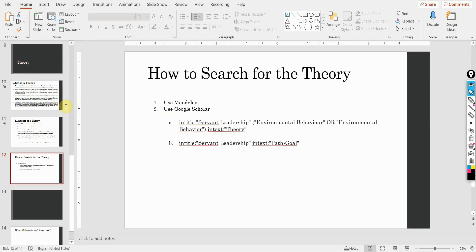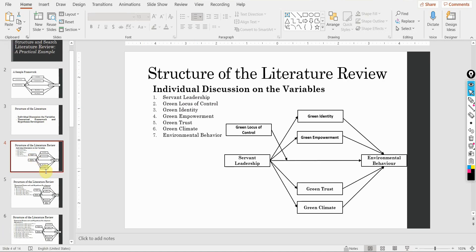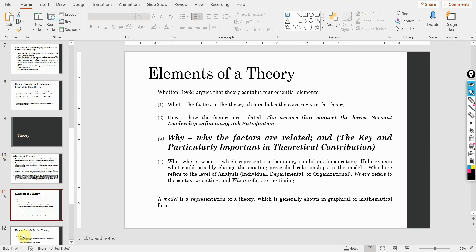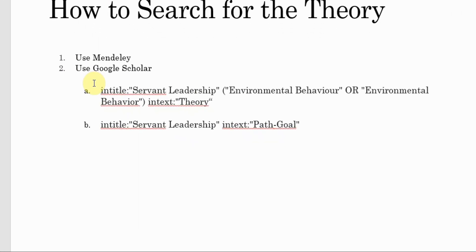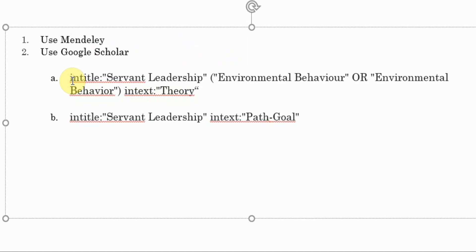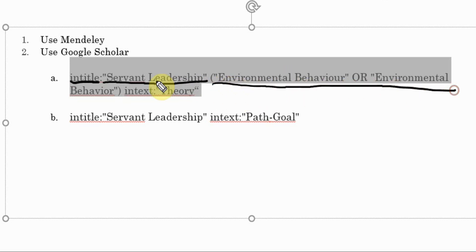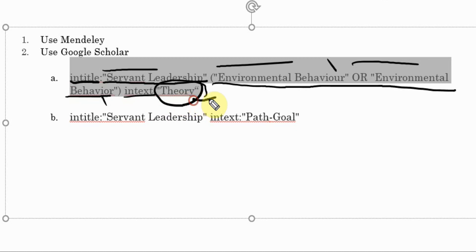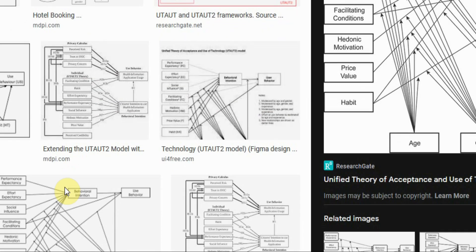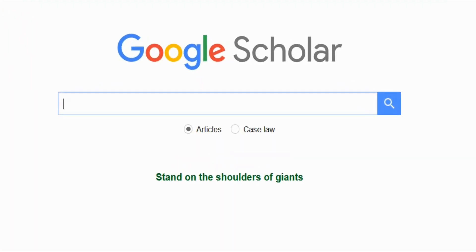How do we search for a particular theory? Let's say I am interested in explaining the relationship between servant leadership and environmental behavior. I search for papers that have linked servant leadership with environmental behavior, and if they used a particular theory, I copy that search text into Google Scholar. The results show that servant leadership and employees' pro-environmental behavior has been explained in light of social learning theory, though other theories may also be utilized.